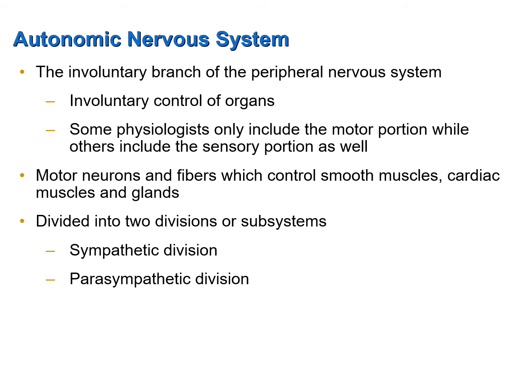The autonomic nervous system is divided into two divisions or subsystems: the sympathetic division and the parasympathetic division. I will go into great detail about these two divisions shortly.